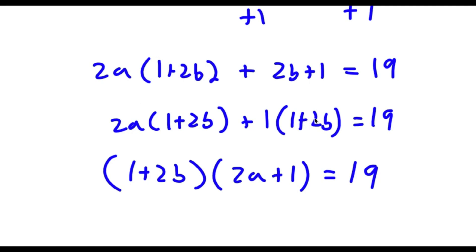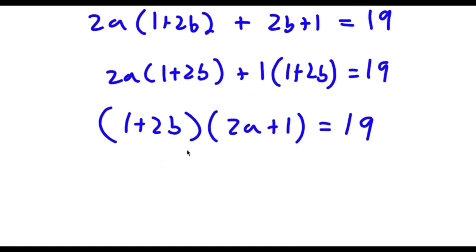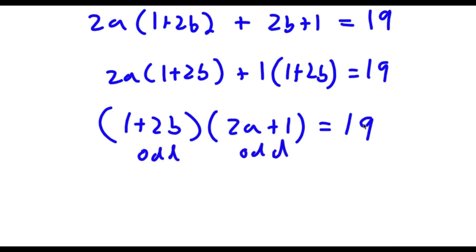Now, as you can see, all three of these are going to be odd, because 2 times any number is going to be even, and an even number plus 1 is going to be odd. Same goes with 2a and 2b. So (1 plus 2b) is odd, (2a plus 1) is odd, and 19 is also odd.